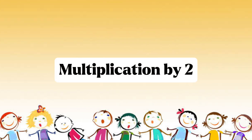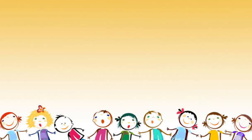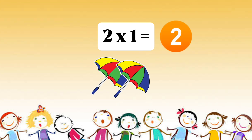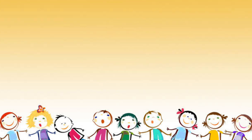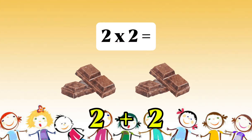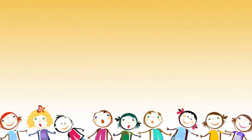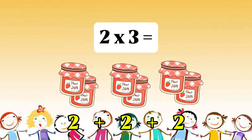Multiplication by 2. 2 multiplied by 1, or 2 times 1, equals 2. 2 multiplied by 2, or 2 times 2, equals 4. 2 multiplied by 3, or 2 times 3, equals 6.